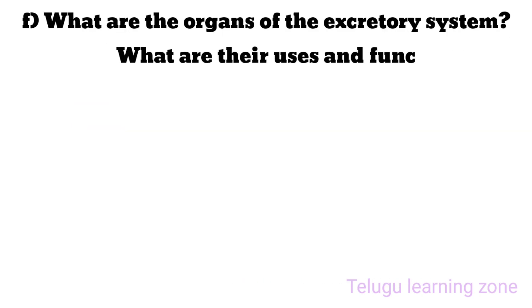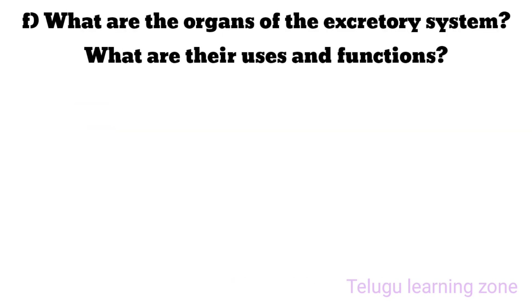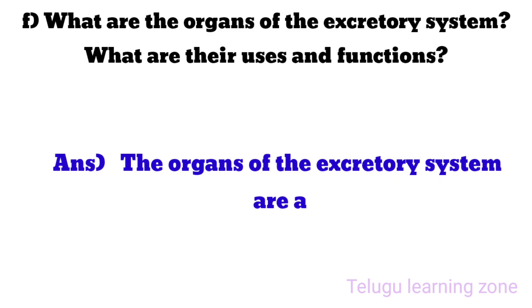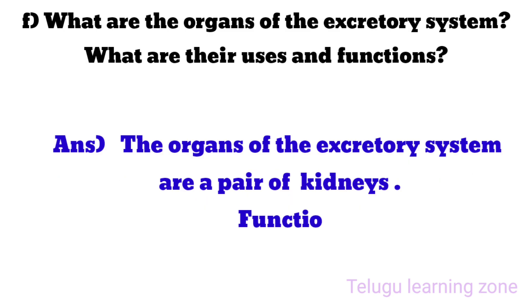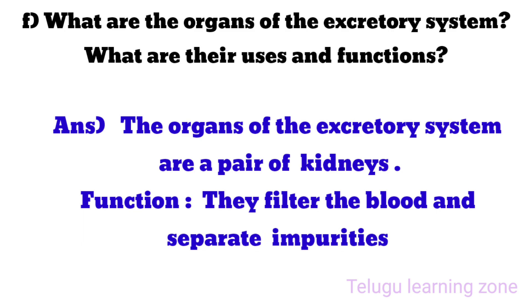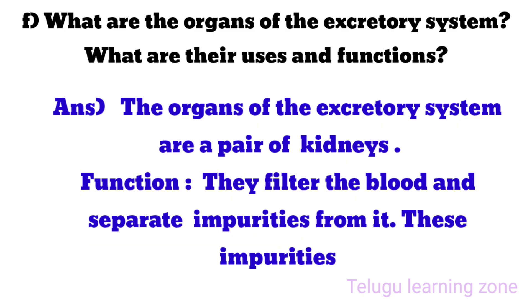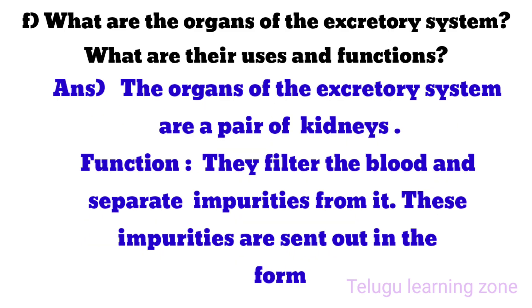What are the organs of the excretory system? What are their uses and functions? The organs of the excretory system are a pair of kidneys. Function: they filter the blood and separate impurities from it. These impurities are sent out in the form of urine.